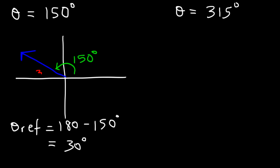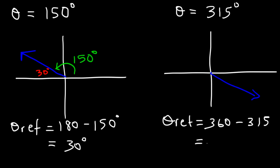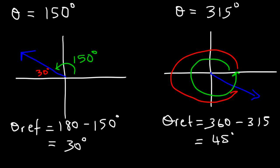So 30 is between the negative x-axis and the terminal ray. Now for an angle of 315, that is in quadrant 4. To find the reference angle in quadrant 4, it's 360 minus the angle in quadrant 4, which is 315. So that's going to be 45. A full rotation is 360, and this is 315, so this missing angle is the difference between 360 and 315 — that's 45, and that's the reference angle.